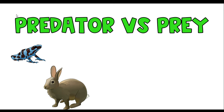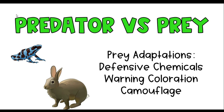Predators and prey in an ecosystem play a really important role. Predators can be adapted — their bodies and physical characteristics can be adapted to best hunt animals — and they can have behaviors that help them hunt better. For example, a cheetah can run up to 60 miles per hour, which definitely helps it hunt its prey. But prey also have adaptations to help defend themselves against predators.